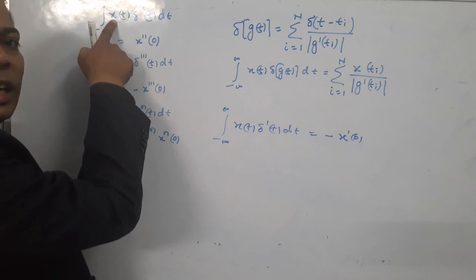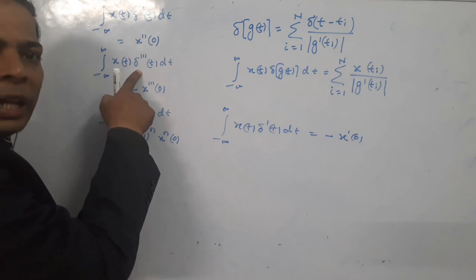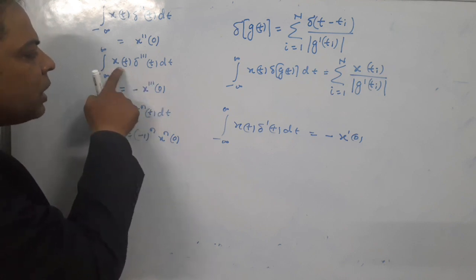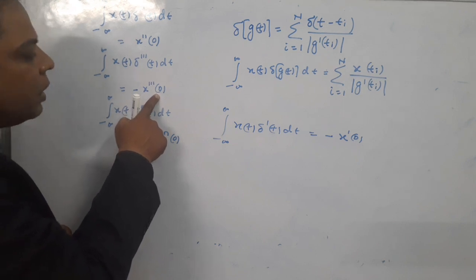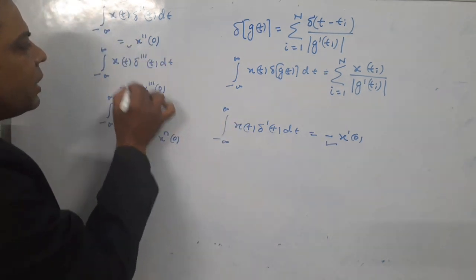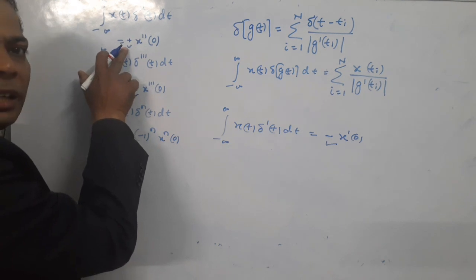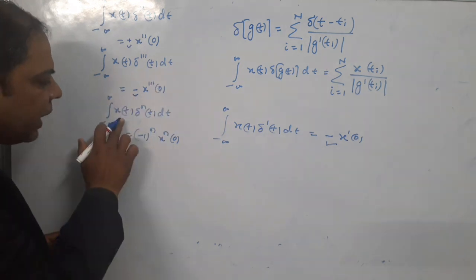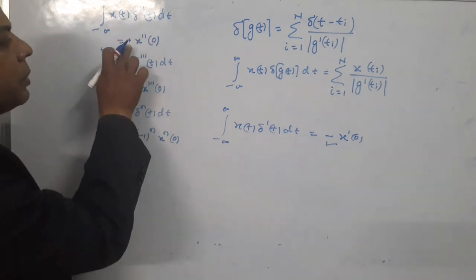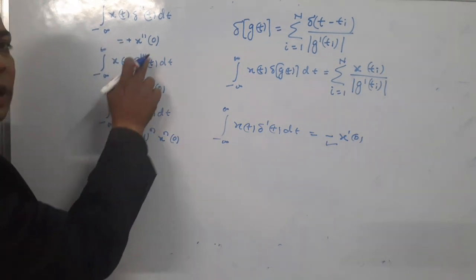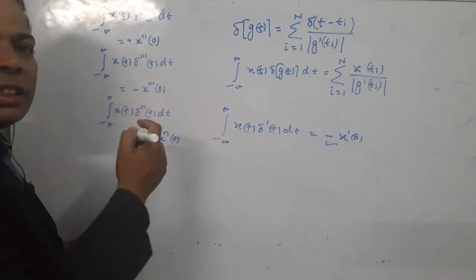Similarly, suppose the triple derivative of the impulse — triple derivative of the impulse is not a triplet function. If you consider the integral of x(t) · δ'''(t) dt, the result is minus x'''(0). Notice the pattern: here it is minus, here it is plus, here it is minus — plus, minus, plus, minus. So in general, the integral of x(t) · δ⁽ⁿ⁾(t) dt equals (-1)^n · x⁽ⁿ⁾(0). If n is even you get positive; if n is odd — for example triple derivative, n=3 — this is negative. This is a very, very important property to remember.